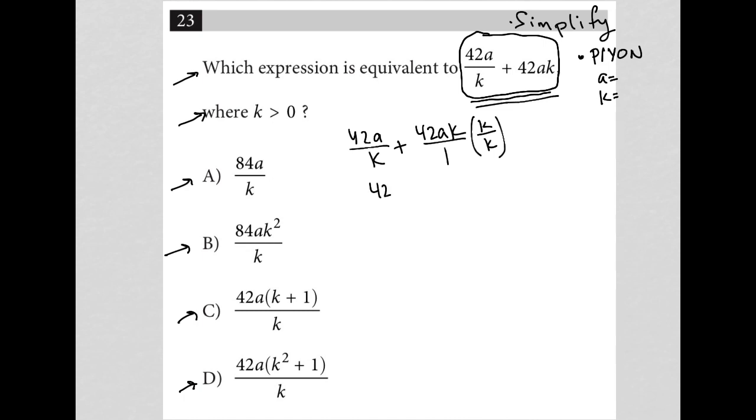Which would turn this into 42a over k plus 42ak squared over k. Now that they have common denominators, I can just add them together by combining the numerators and keeping the denominator the same. So my new numerator will be 42a plus 42ak squared all over k.